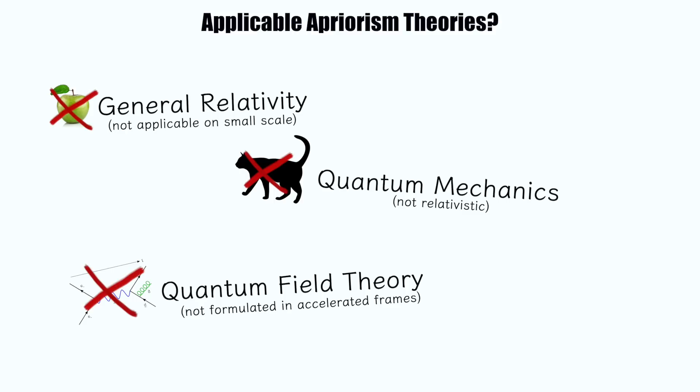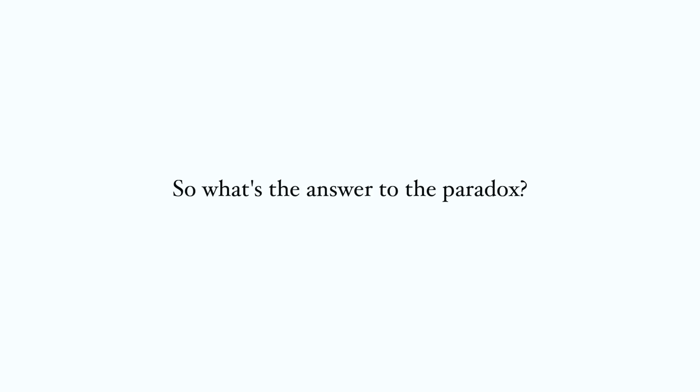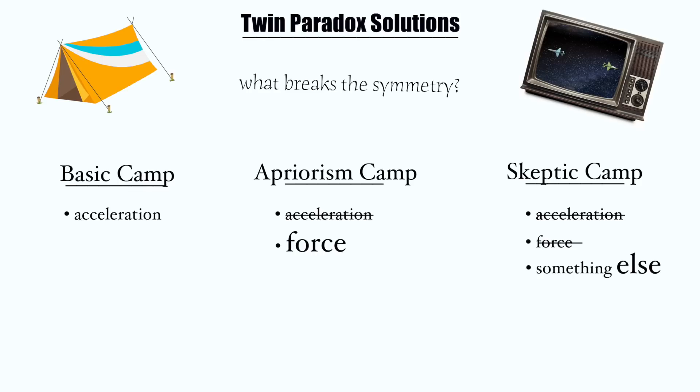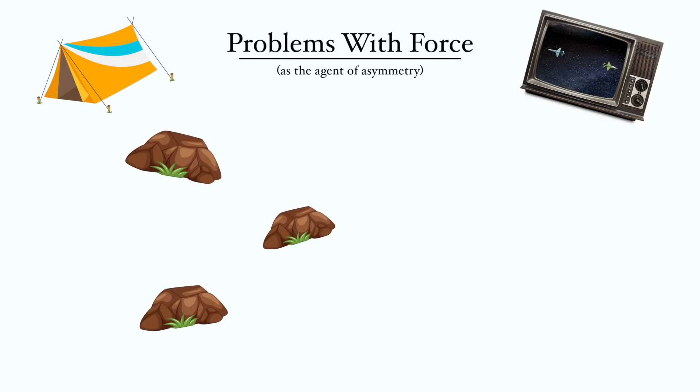Okay, we're getting a little ahead of ourselves. These are more complicated issues we will be talking about in later videos. For now, if you're seeking to understand the twin paradox at a deeper level, the answer that experiencing force, or, equivalently, inhabiting a non-inertial frame, is what breaks the symmetry of the paradox is certainly a much clearer and more satisfying answer than your basic variety acceleration solution. But it definitely leaves a few stones unturned and leads to questions that, from a philosophical standpoint, are rather troubling.